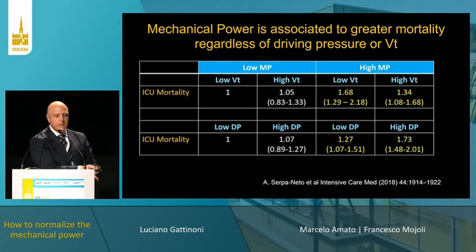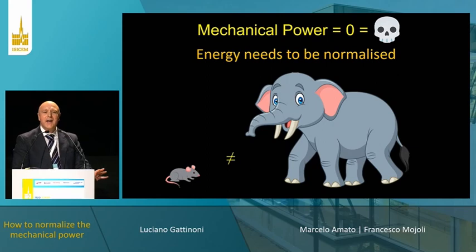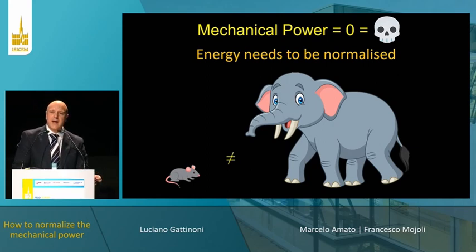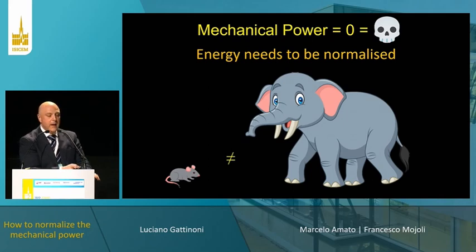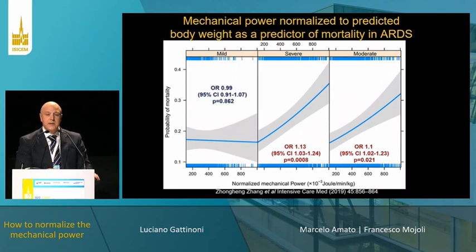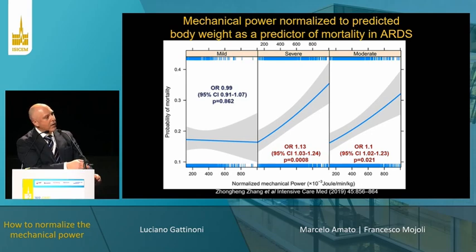The other point is that if we accept that mechanical power of zero equals death, we shouldn't have zero power. But the question is: what is the mechanical power appropriate for each individual patient? Quite clearly, the energy needs to be normalised — maybe to body size. This study has tried to normalise mechanical power to body size. You can see this is joules per kilogram of predicted body weight, and it correlates quite well to increased risk of death.